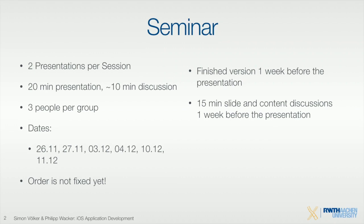We will have 10 lectures now and then you have the presentation dates. So we have six dates and 12 groups basically — that's why we have 36 participants in this class. The order in which you will present is not fixed yet because we have more topics than groups. We have 14 topics and you can choose among these topics, and we will order this in a way that makes sense depending on what topics you choose.